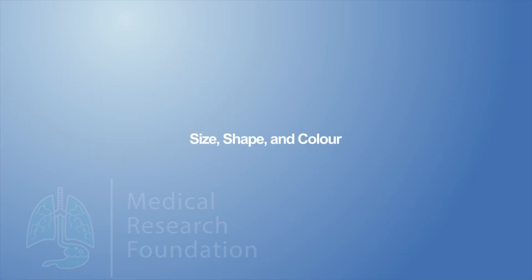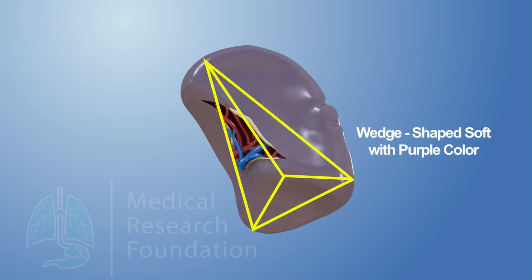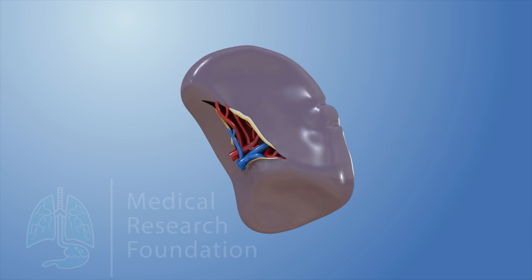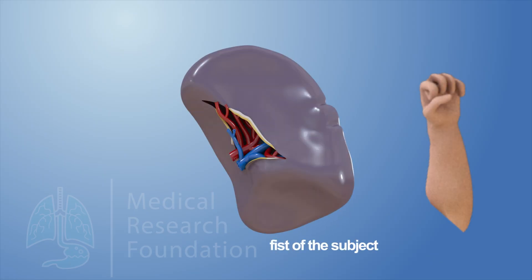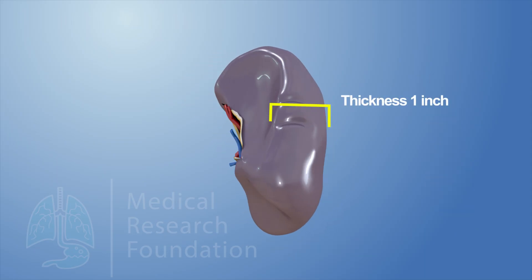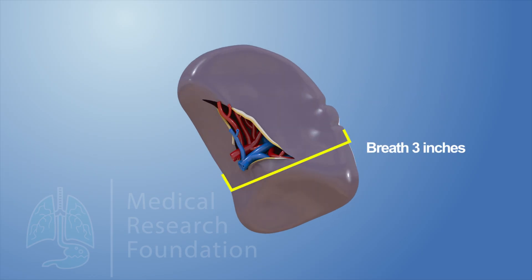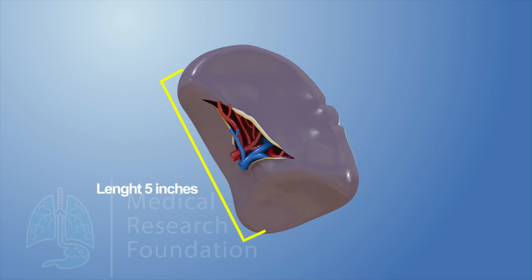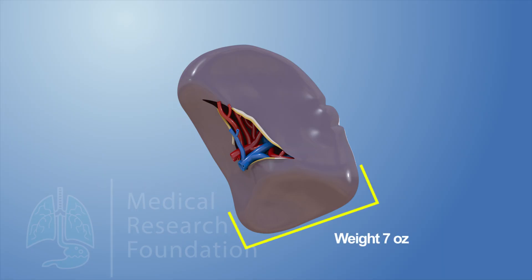The spleen is a wedge-shaped soft organ with a purple color. Its size roughly corresponds to the fist of the subject. The measurements of the spleen follow the 1-3-5-7 rule: thickness — 1 inch, breadth — 3 inches, length — 5 inches, weight — 7 ounces.